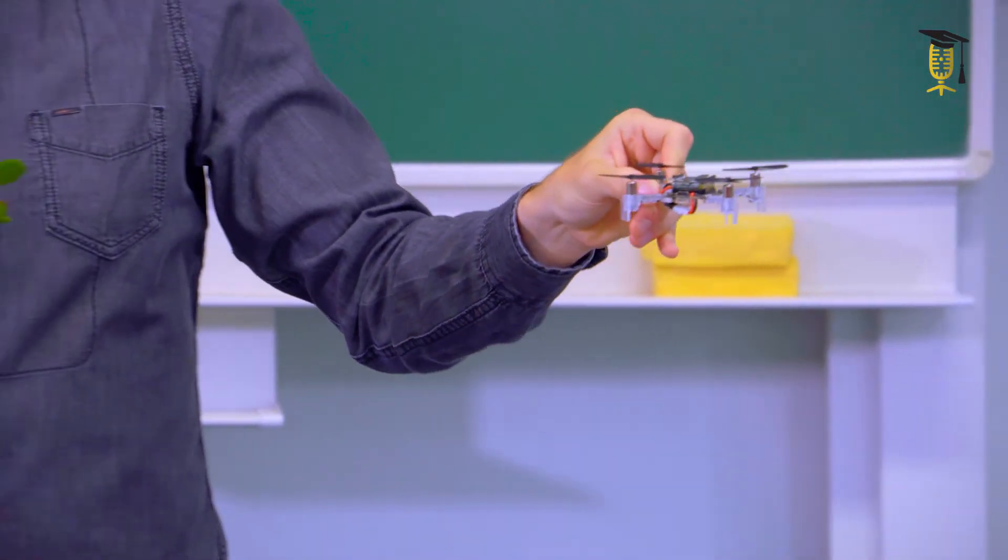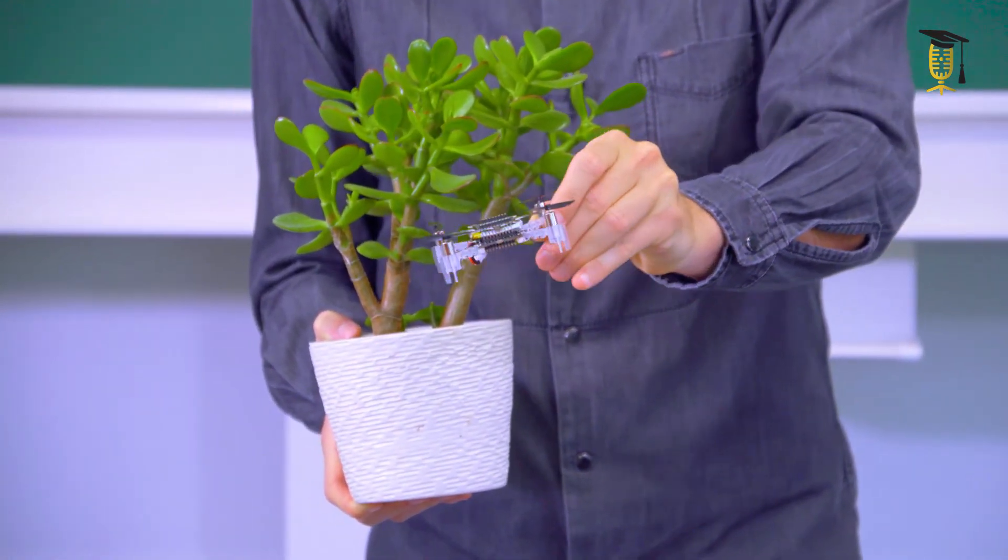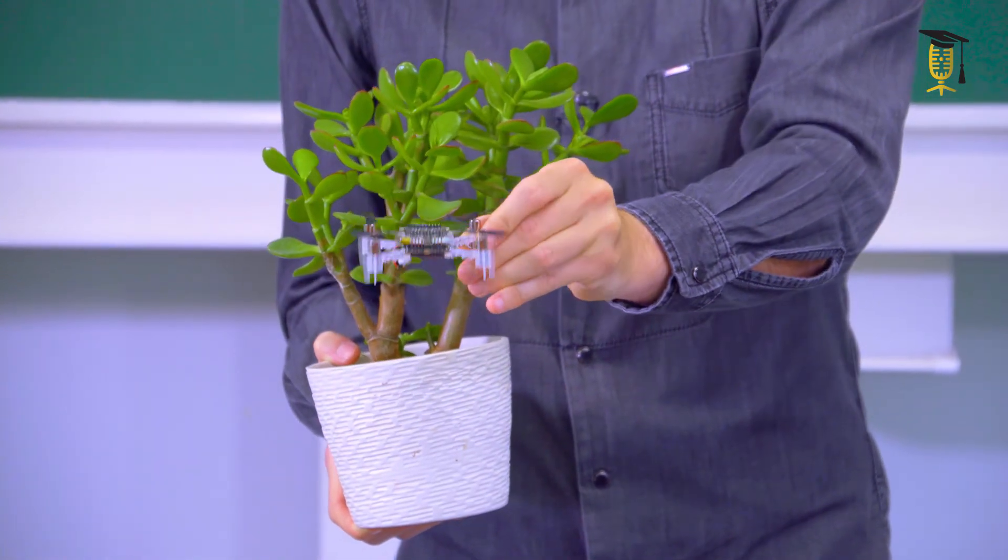So it thinks very fast, even on the tiny brain of this tiny drone. When this drone is flying and suddenly sees a tree, it can immediately adapt its flight path to stay away from the tree, even when there is a strong wind gust that pushes the drone towards the tree.